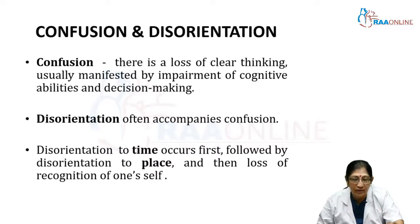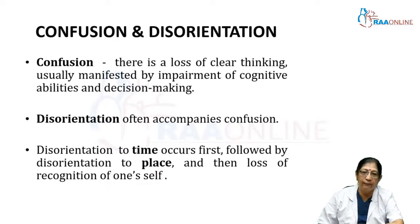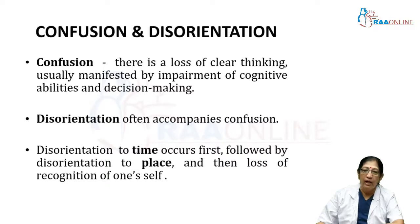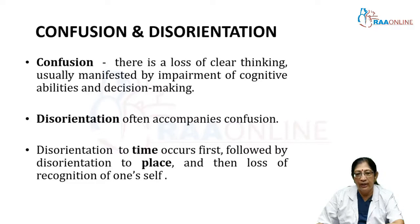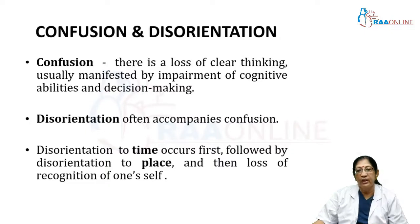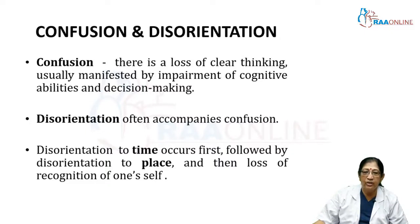When we consider a person in confusion or disorientation — what does it mean when a person is confused? There is loss of clear thinking, usually manifested by impairment of cognitive abilities and decision making. Disorientation is often accompanied by confusion. Disorientation means not being able to identify the time, place, or person. Disorientation to time occurs first, followed by disorientation to place, and then disorientation to self.